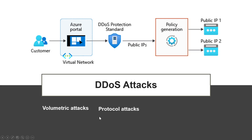The second type is protocol attacks. Protocol attacks render a target inaccessible by exhausting server resources with false protocol requests that exploit weaknesses in layer 3 network and layer 4 protocols. These types of attacks are typically measured in packets per second.